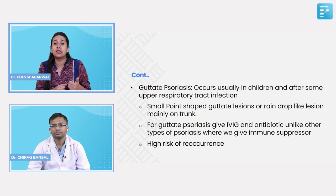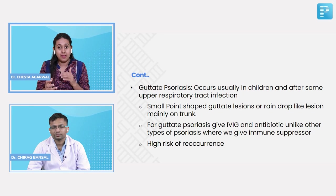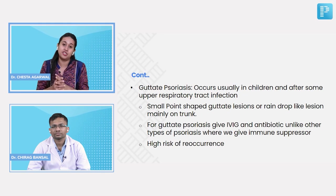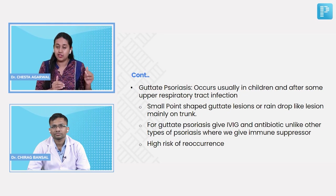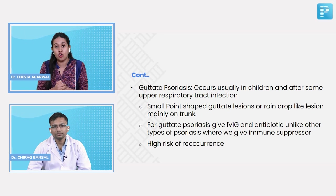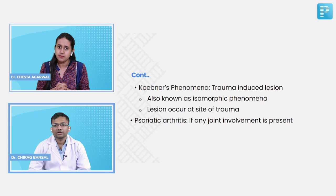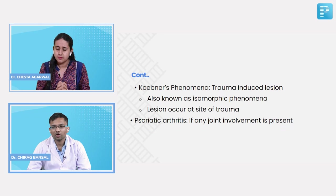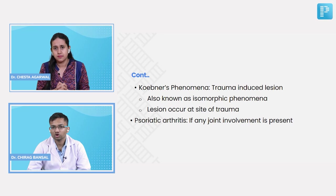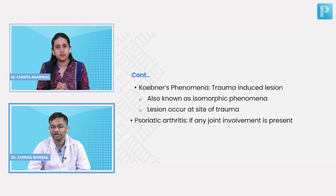Why was a history of trauma at the site taken? There is a phenomenon called Koebner's phenomenon, in which trauma-induced lesions develop at the site of trauma on normal-looking skin. We take this history to determine if it is positive or not.